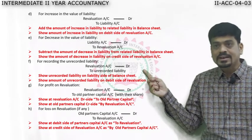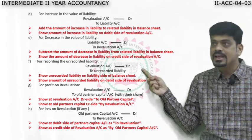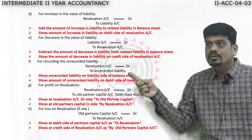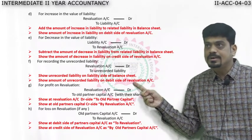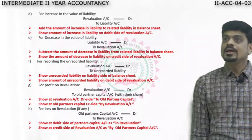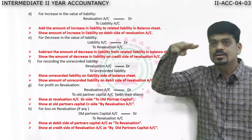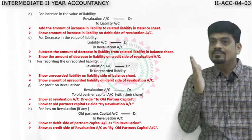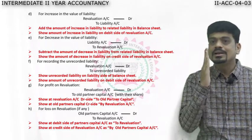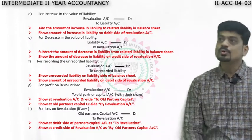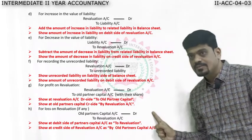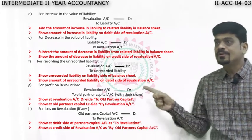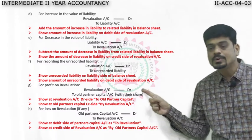For an unrecorded liability — we may have forgotten to record a liability. Entry: Revaluation Account debit to Unrecorded Liability Account. The effect: show on the debit side of revaluation account and in the new balance sheet on the liability side. Once we post all six entries into the revaluation account, we will know whether there is profit or loss. If credit side is more, we get profit; if debit side is more, we get loss.